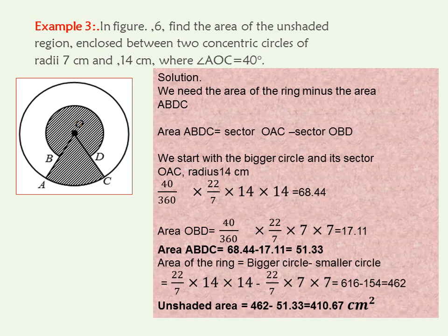We start with the bigger circle and its sector OAC. The radius is 14 centimeters. Because the angle at O is 40, we'll say it is 40 degrees over 360 times 22 over 7 times 14 times 14. When we evaluate this, you'll get 68.44 centimeters squared. Then you do the same for the smaller sector formed by the smaller circle, that sector OBD. It is 40 over 360 times 22 over 7 times 7 times 7, and that will give you 17.11 centimeters squared.